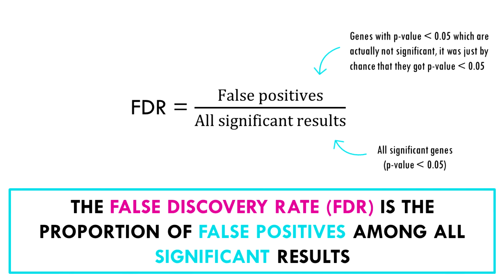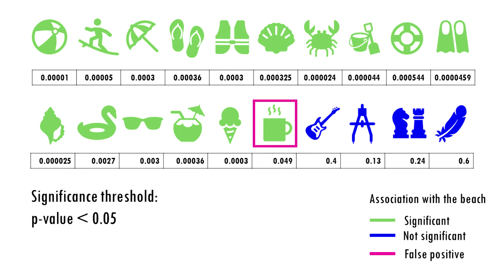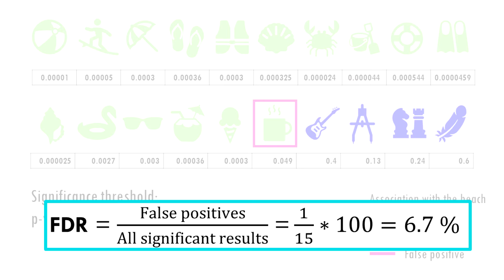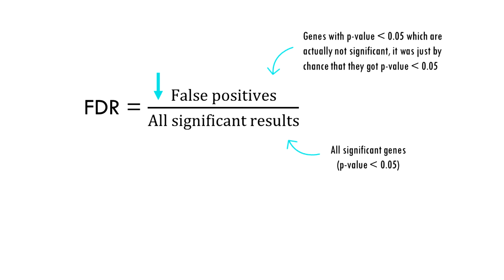False positives, for example, are genes that are not statistically significant — so they are not interesting for us — but just by chance they got a p-value lower than 0.05. In our example, there is one false positive, the coffee, amongst 15 significant results. So the FDR is 1 divided by 15, so 6.7%. What we want to do is bring this number down — so within our significant results, reduce the number of falsely significant results.